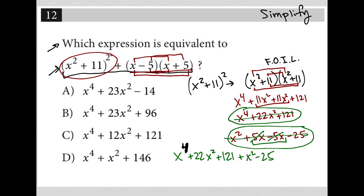So when I combine this together and combine like terms, I have my x to the fourth power. 22x squared plus x squared is 23x squared. So x to the fourth plus 23x squared, and then 121 minus 25 would be a positive 96. So there's my answer: x to the fourth power plus 23x squared plus 96. And therefore, the correct answer here is choice B.